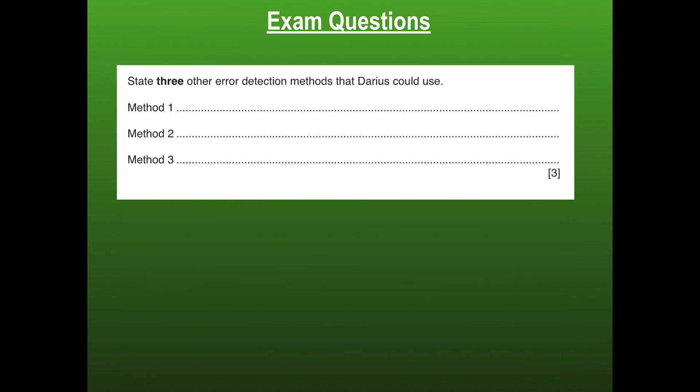State three other error detection methods Darius could use. We've covered four alternatives today: check digit, echo check, automatic repeat request, and parity check.